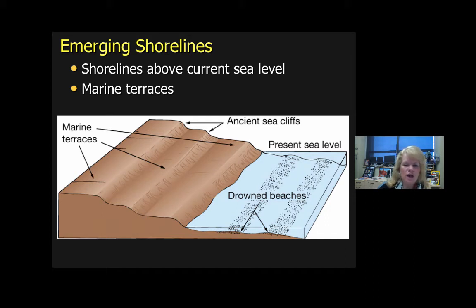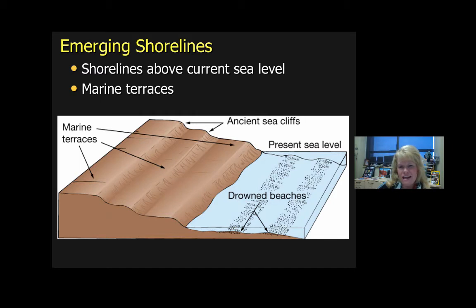Emerging shorelines are terraces that are now above sea level but used to be a shoreline. This can happen if sea level has dropped, or through isostatic rebound where the ground has popped back into place. In Alaska, an earthquake in 1964 shoved land upward about 30 feet, moving the beach line deposits up and leaving the new shoreline making a fresh deposition in its current location.